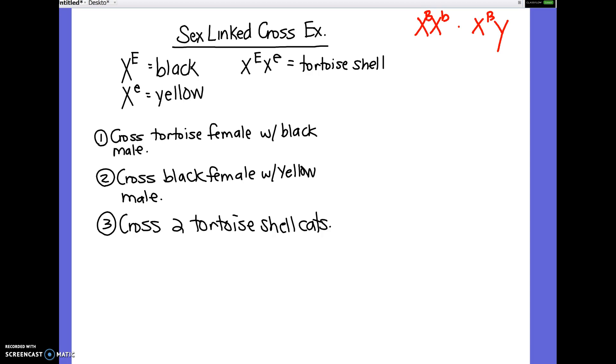So this gene is actually codominant. X big E codes for black fur. X little E codes for yellow fur. And if a cat is X big E, X little E, then the cat will be tortoiseshell, meaning that they'll have patches of black and yellow.